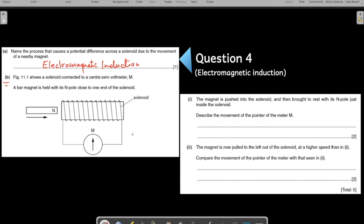Now part B. The figure here shows a solenoid connected to a zero center voltmeter. So you see a voltmeter, you see the solenoid as well. A bar magnet is held with its north pole close to one end of the solenoid. So you are given the bar magnet, you are given the solenoid, you are given the voltmeter. You identify all the parts correctly.